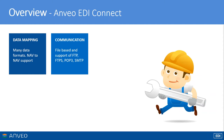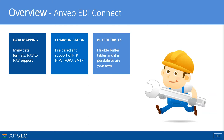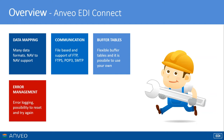We have a communication component where you can put data onto the file system, receive files from your network path, or even use remote protocols like FTP, FTPS, POP3, and so on. Our module provides buffer tables that you can use to import data and store it. You can then enhance the data, modify it, and use it later in your mappings or in NAV. You can also use your own buffer tables or add fields to our existing ones — they are just normal NAV tables.